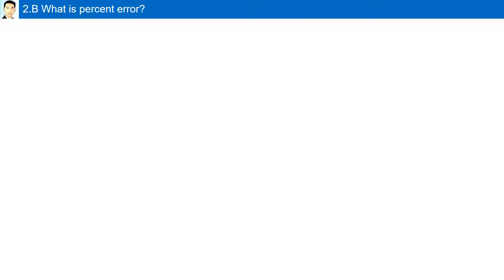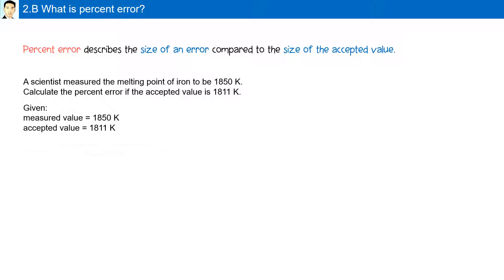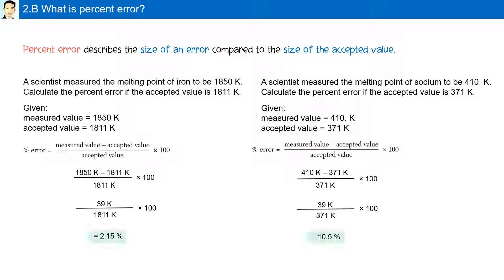What is percent error? Percent error describes the size of an error compared to the size of the accepted value. Two experiments were conducted and the percent errors were calculated. The difference between the measured and the accepted value in both experiments were the same, 39 kelvins. However,